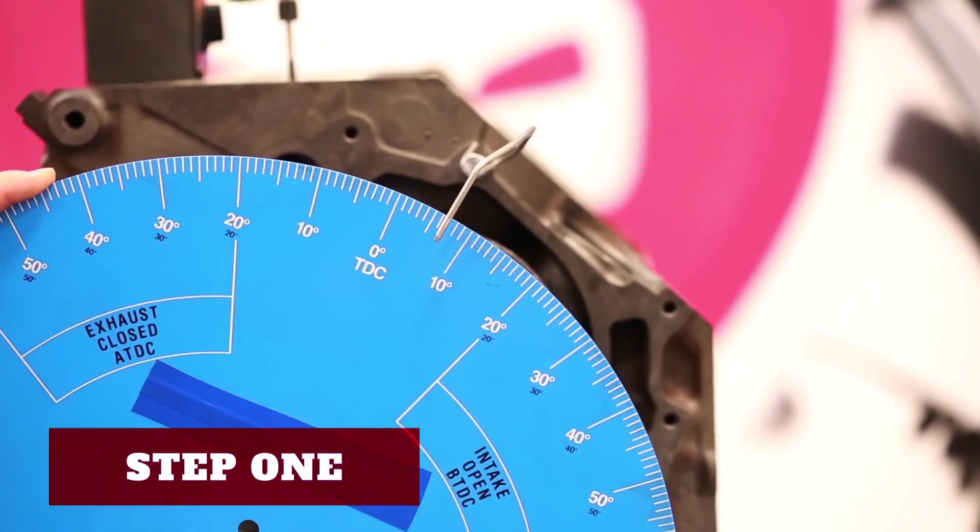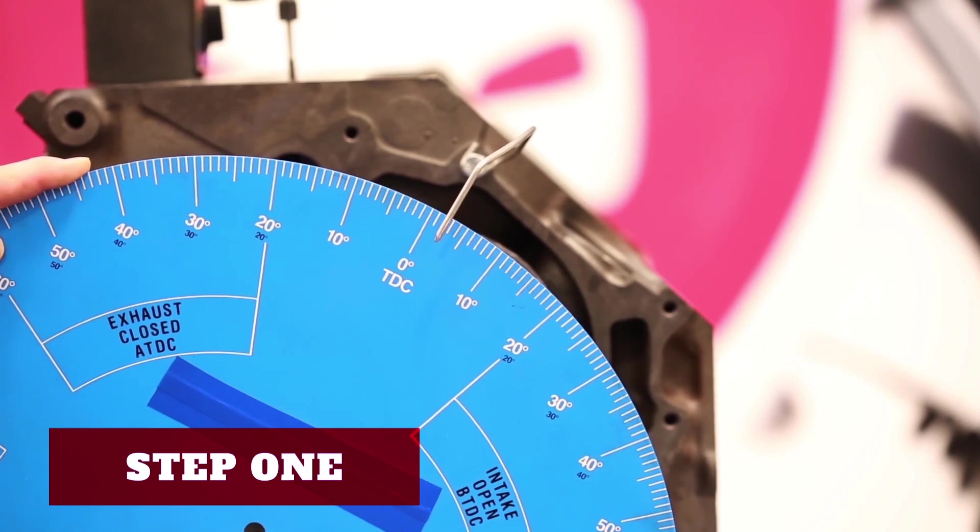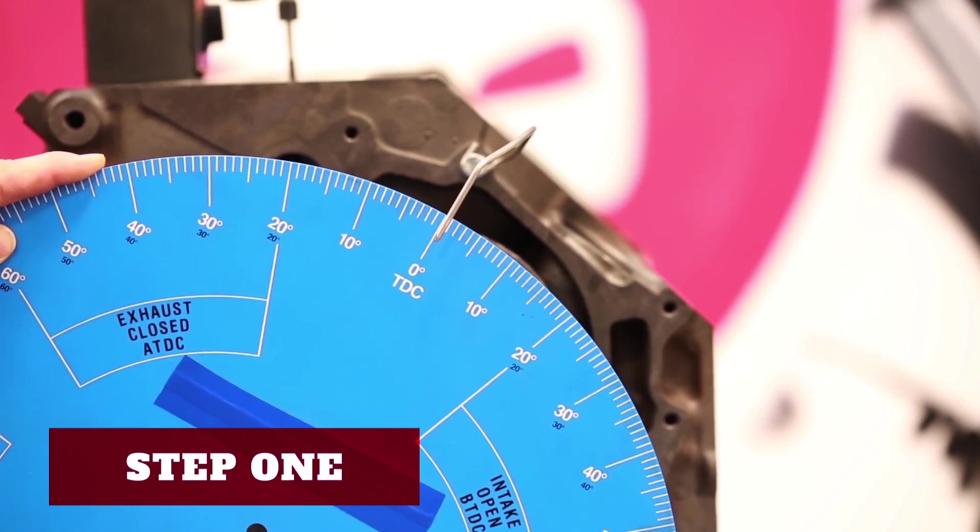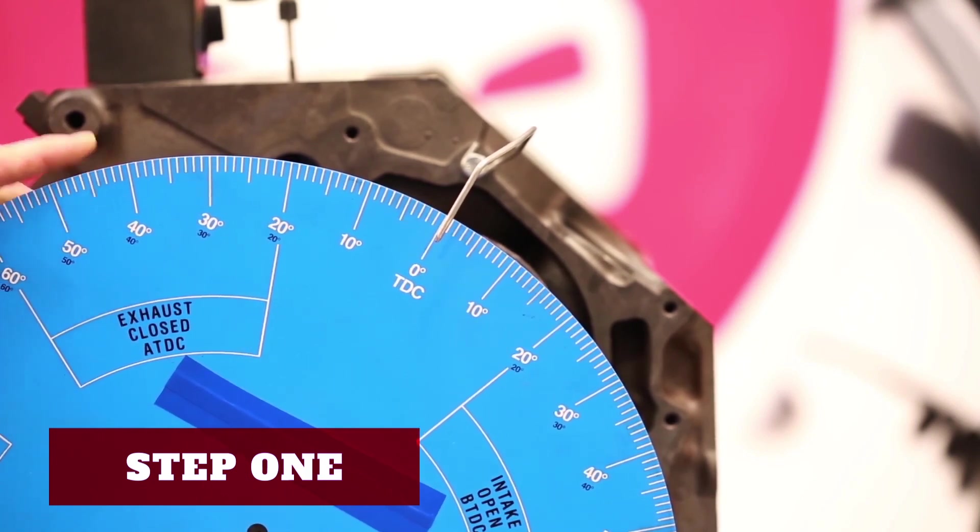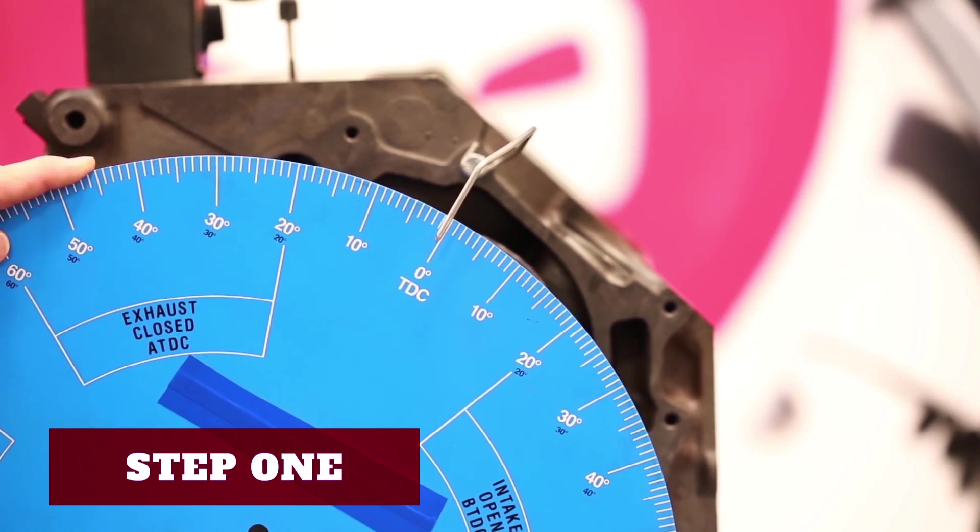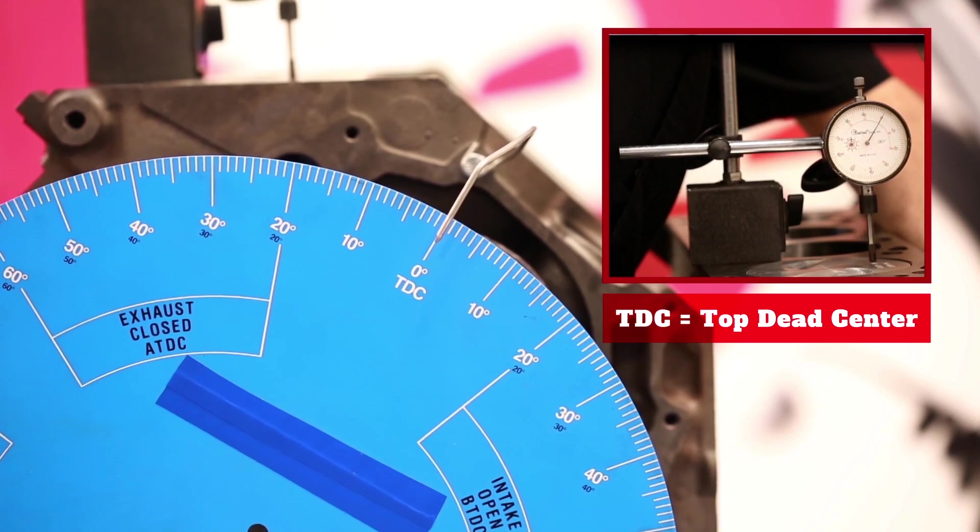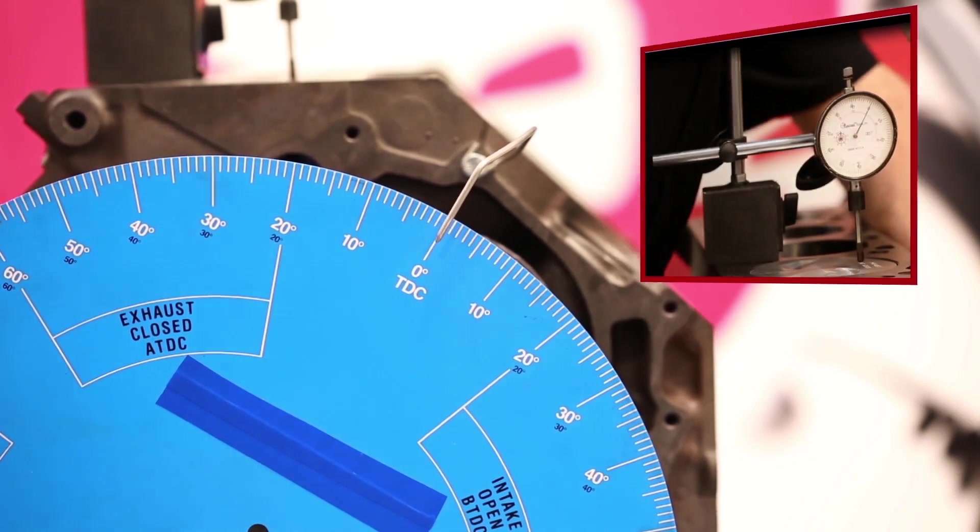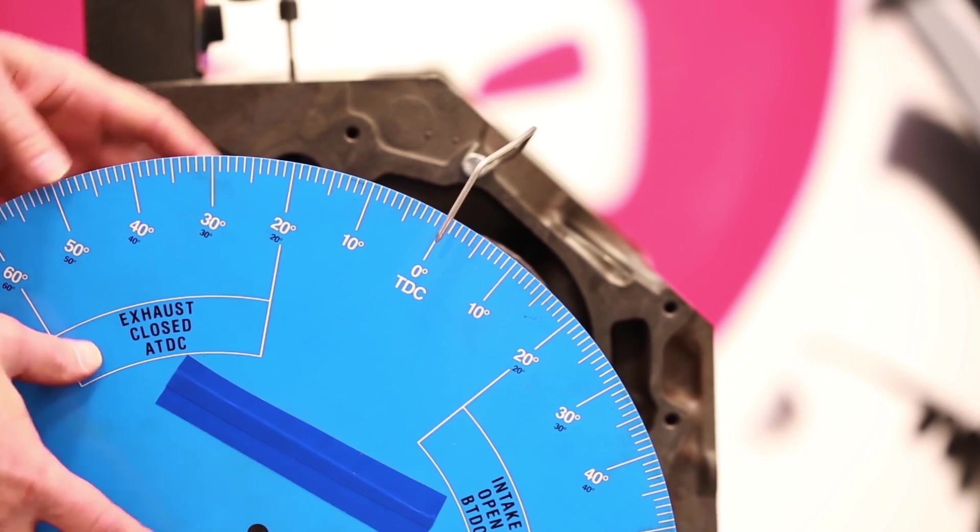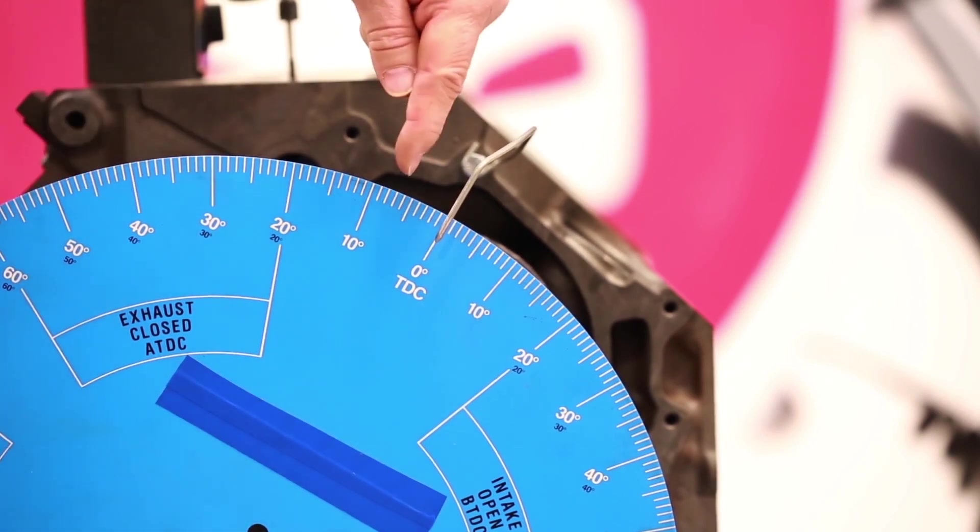We'll start the process by moving the degree wheel until the piston comes up to top dead center and the indicator stops, then just starts to change direction. This is TDC or top dead center. Now we can set our degree wheel to zero or adjust our pointer to zero.